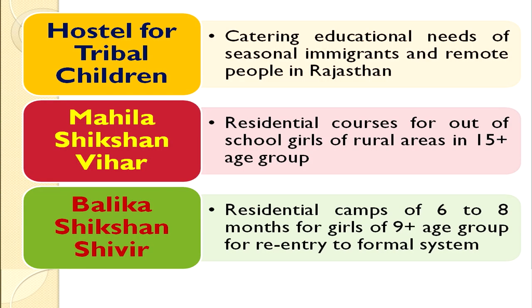Another intervention was Mahila Shikshan Bihar — an intervention under which residential courses were started for out-of-school girls who could not attend schools because of various reasons in rural areas. These were for girls belonging to the age group of 15 years and above. Mahila Shikshan Bihars were established and residential courses were started for those girls.